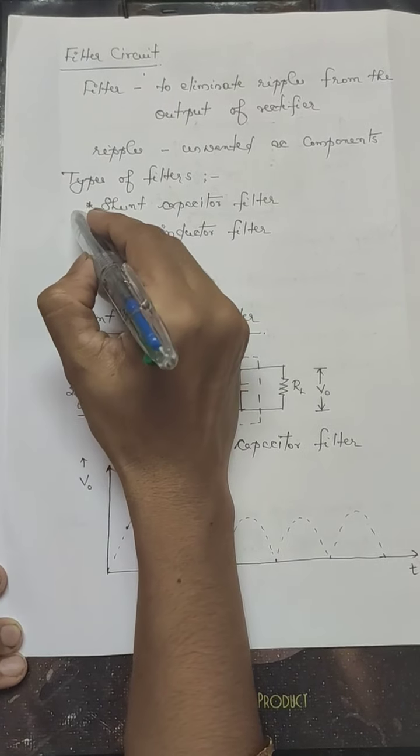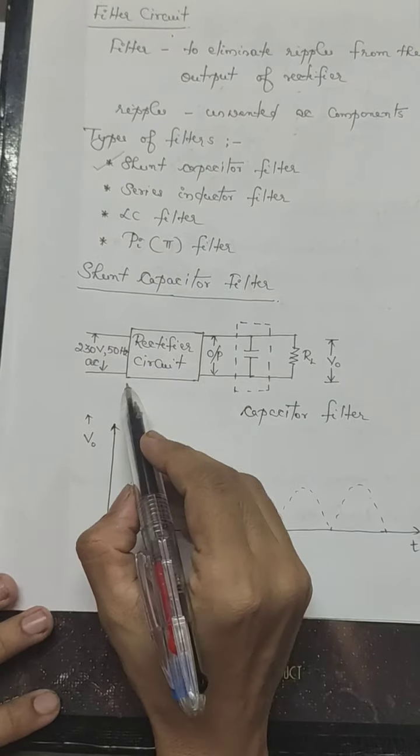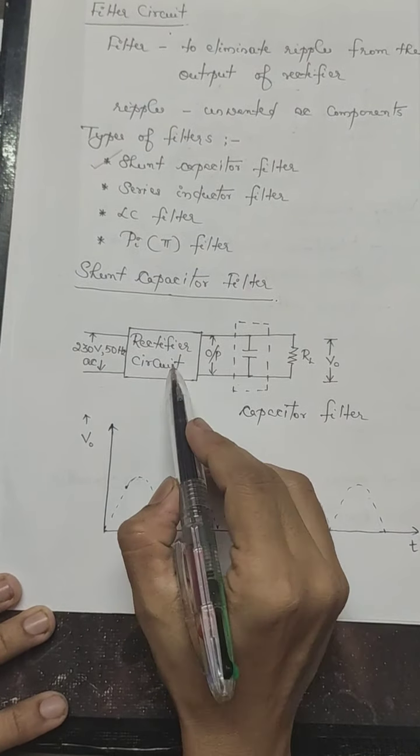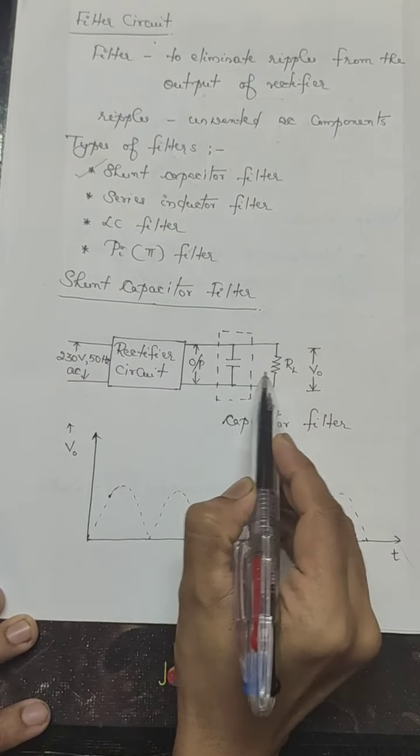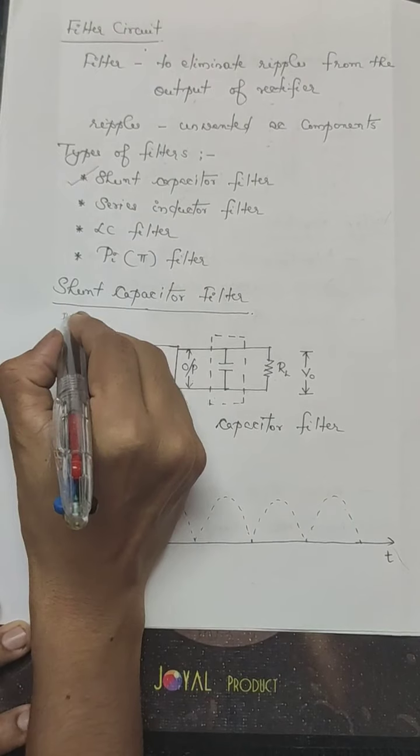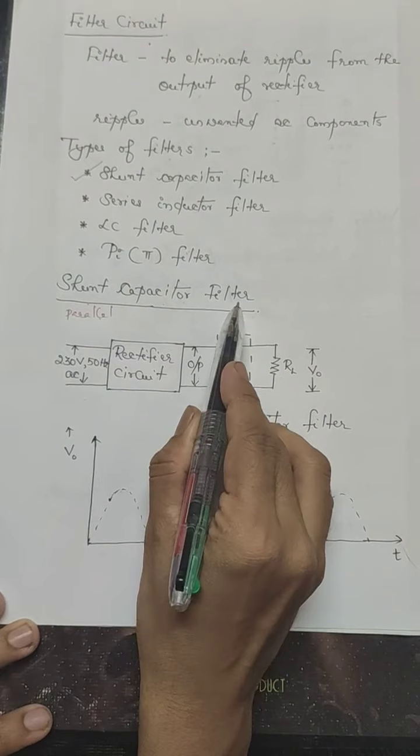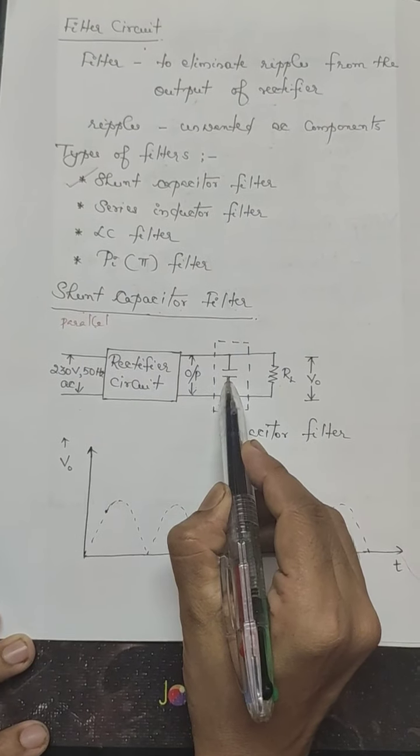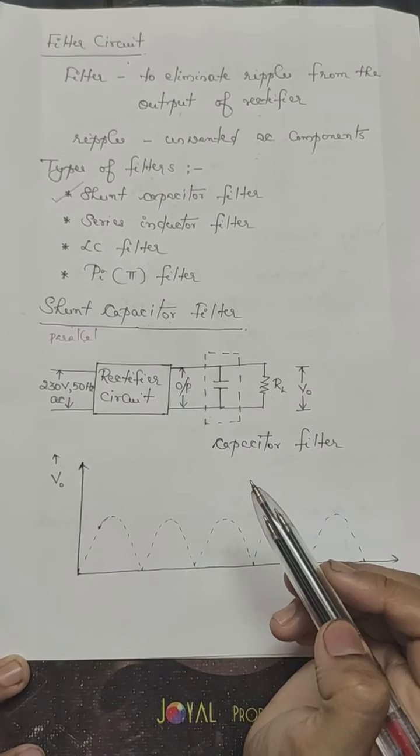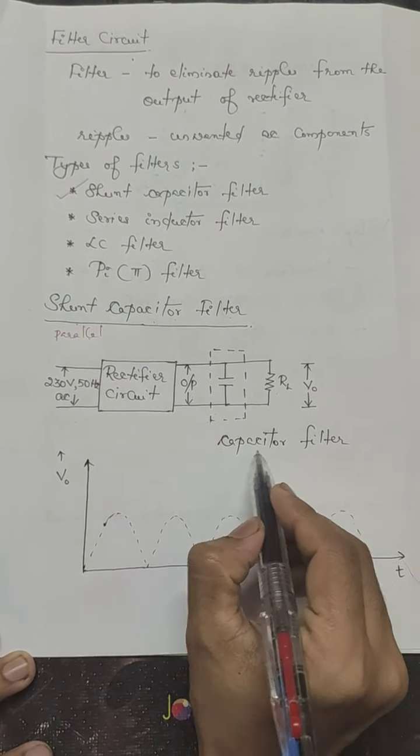Among these, we have to study only shunt capacitor filter in detail. This is the schematic diagram of a shunt capacitor filter connected in between the rectifier output and the load. The word shunt means parallel. So the shunt capacitor filter is connected in parallel to the load resistor. Here this shows the shunt capacitor filter. Now let us see the operation of this capacitor filter.